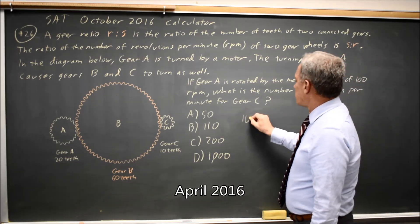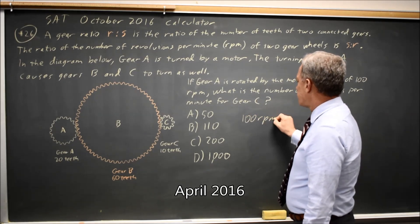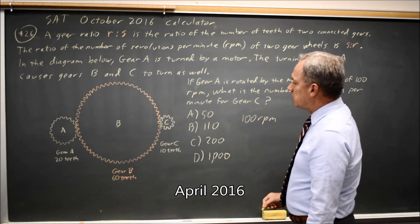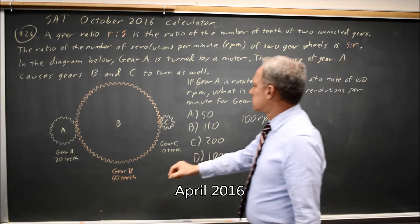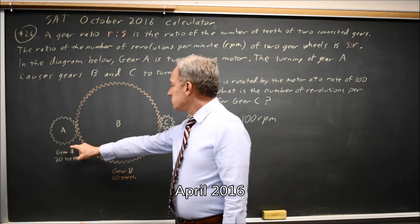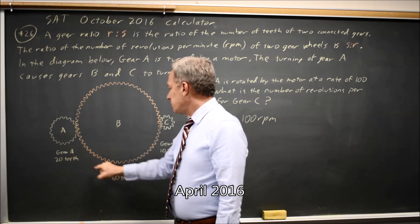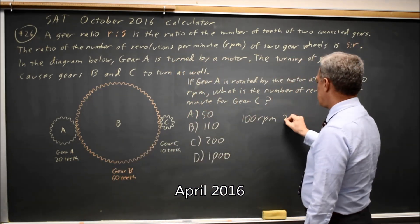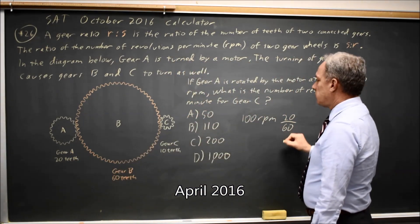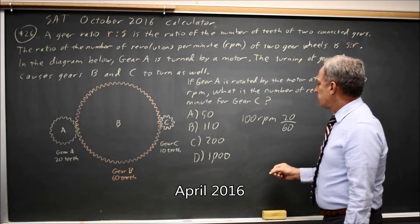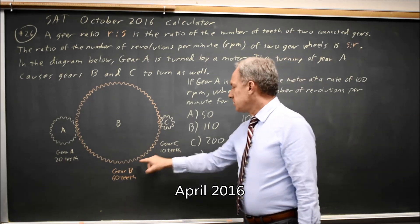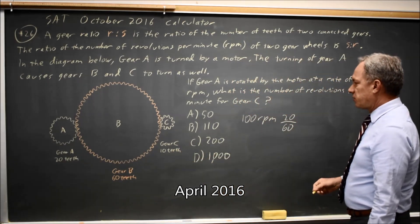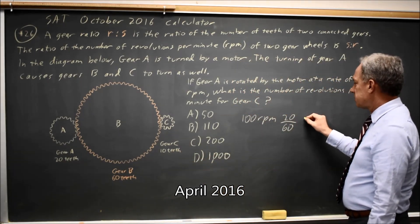And we have 100 RPM for A times the ratio S to R will give us gear B. So that would be times 20 over 60 will give us the rate for B. And then if you multiply that by 60 over 10, that'll give the rate for gear C.